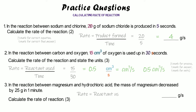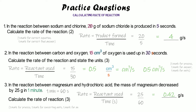For question three, the mass of magnesium is decreasing, so we use reactant used divided by time. The time is given as one minute, but time must be in seconds, so we convert: 1 minute equals 60 seconds. Reactant used is 25 grams and time is 60 seconds: 25 divided by 60 equals 0.42 grams per second. You get one mark for the equation, one for the answer, and one for converting minutes to seconds.